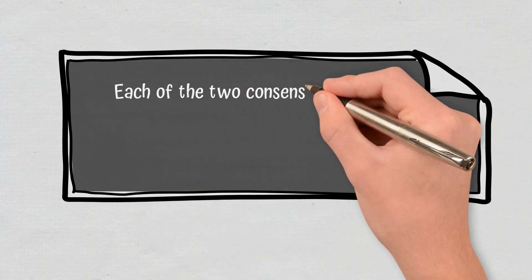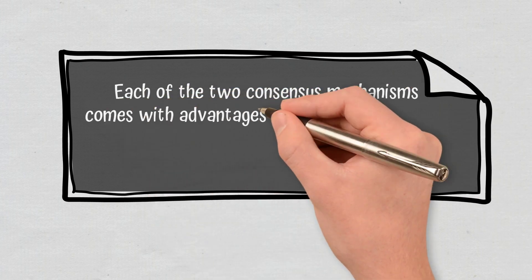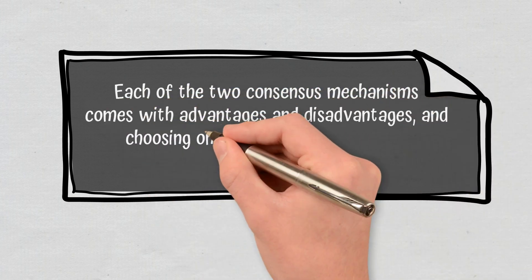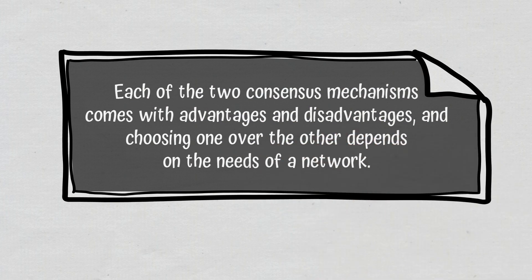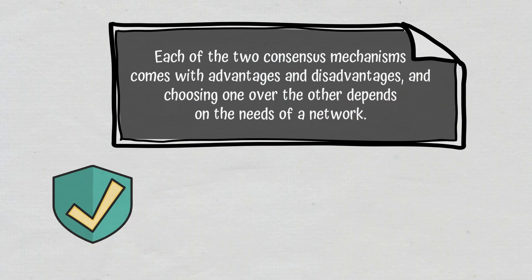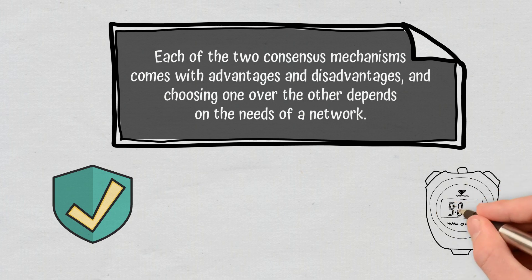Conclusions. Each of the two consensus mechanisms come with advantages and disadvantages, and choosing one over the other depends on the needs of a network. For example, Proof-of-Work is required by networks that focus on preventing fraud, building trust, and ensuring high security. On the other hand, Proof-of-Stake is largely utilized by networks that require high transaction speed.